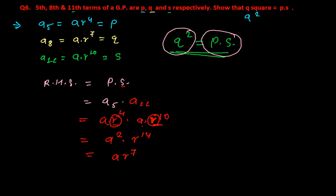We can rewrite a squared·r to the power 14 as (a·r to the power 7) whole squared, because squaring gives a squared and r to the power 14. Now, a·r to the power 7 is actually Q — the 8th term. So this equals Q squared, which is our left-hand side. Hence proved.